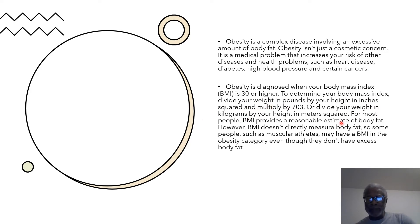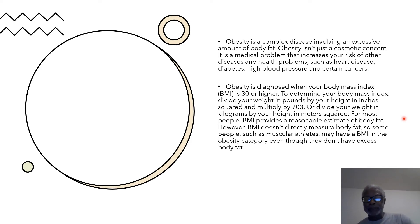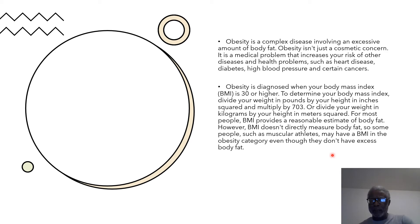To determine your body mass index, divide your weight in pounds by your height in inches squared and multiply by 703, or divide your weight in kilograms by your height in meters squared. For most people, BMI provides a reasonable estimate of body fat. If you don't know how to calculate it, you can contact any health coach, fitness coach, or gym, and they'll be glad to help you find out your BMI.